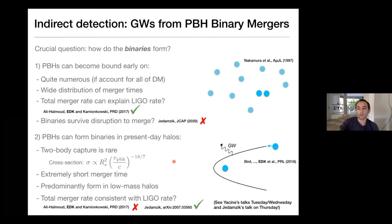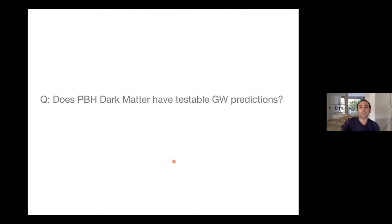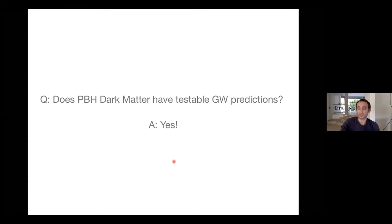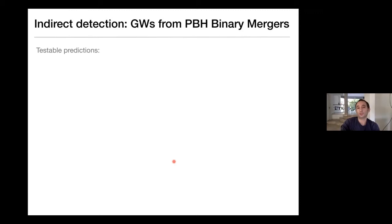That's a shout out to Yassine's and Kirsten's talks later this week. But assuming the rate works out, the question is whether PBH dark matter has testable gravitational wave predictions — whether you can distinguish between gravitational waves from stellar black holes and ones from primordial black holes. The answer is a definite yes. Let's go through the list of testable predictions for gravitational waves from the merger of primordial black holes.